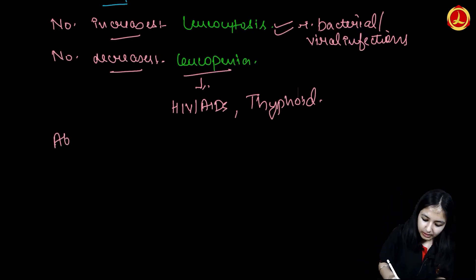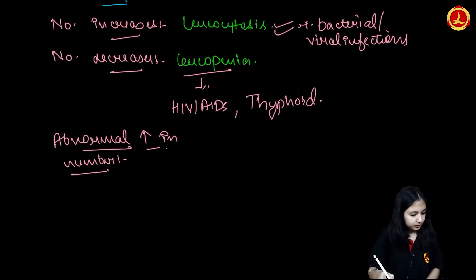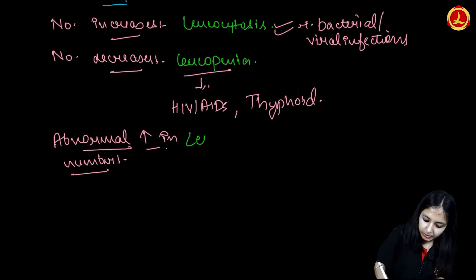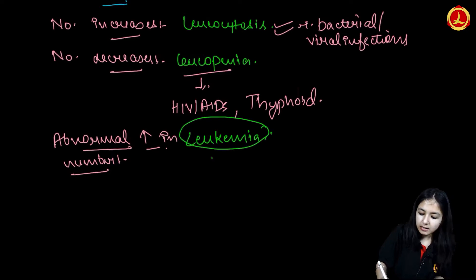When there is abnormal increase in number of WBCs, we call it as Leucopenia as we can say in blood cancer.